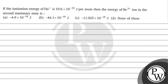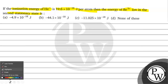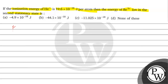Hello, let's read this question. The question says: if the ionization energy of helium plus is 19.6 into 10 to the power minus 18 joule per atom, then the energy of beryllium plus 3 ion in the second stationary state is? Options are given to us. The key concept for this question is ionization energy.